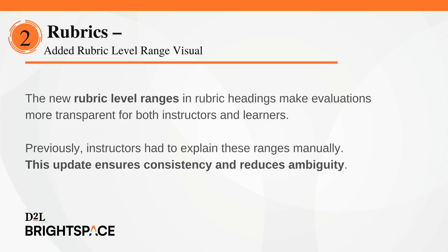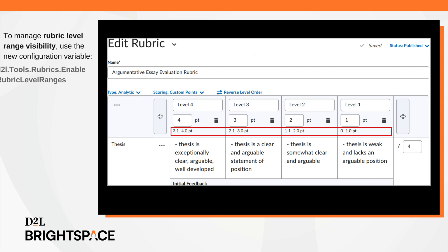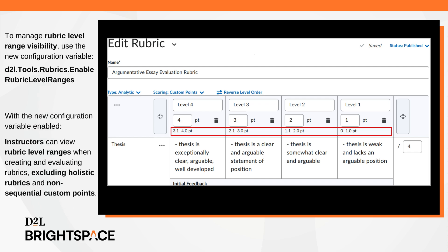This feature introduces rubric-level ranges in rubric headings, making evaluations more transparent for both instructors and learners. Previously, instructors had to manually explain these ranges to learners. This update enhances consistency and reduces ambiguity. With the new configuration variable, D2L.Tools.Rubrics.EnableRubricLevelRanges, administrators can manage rubric-level range visibility.